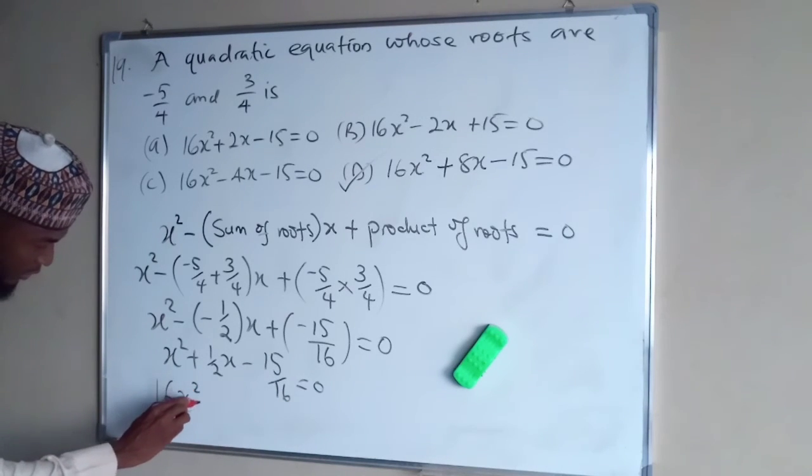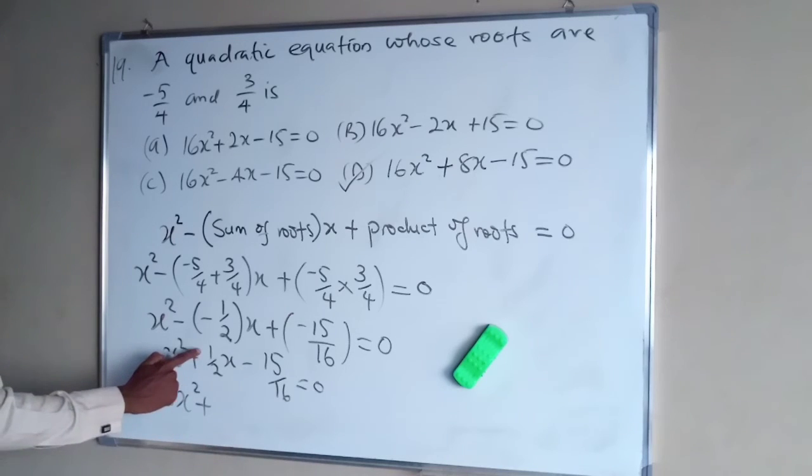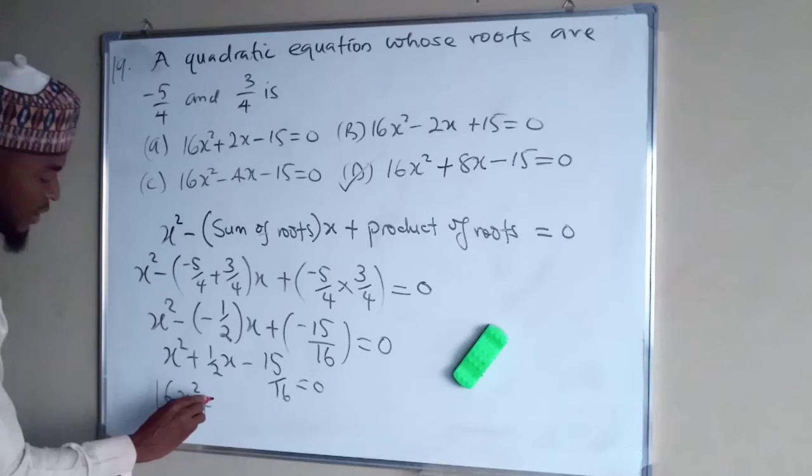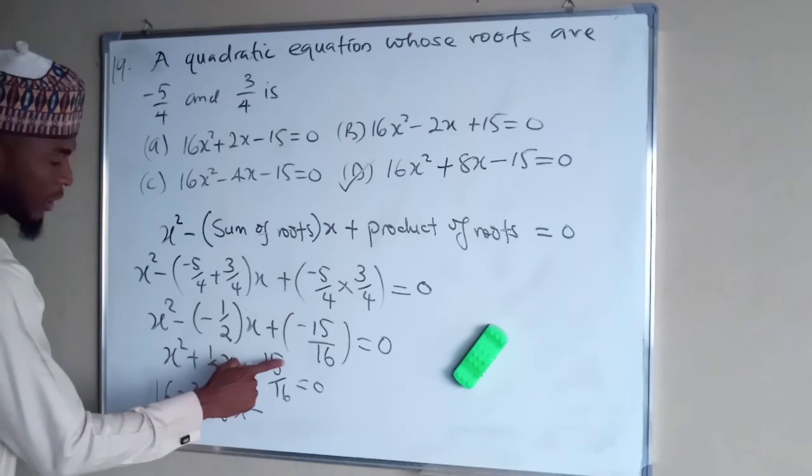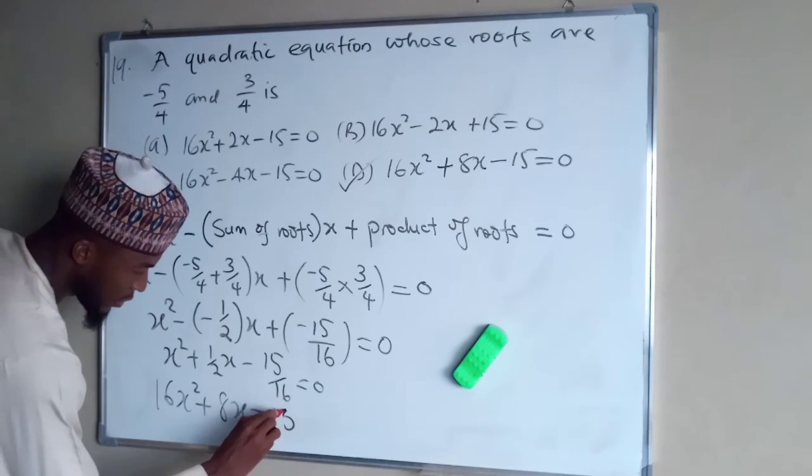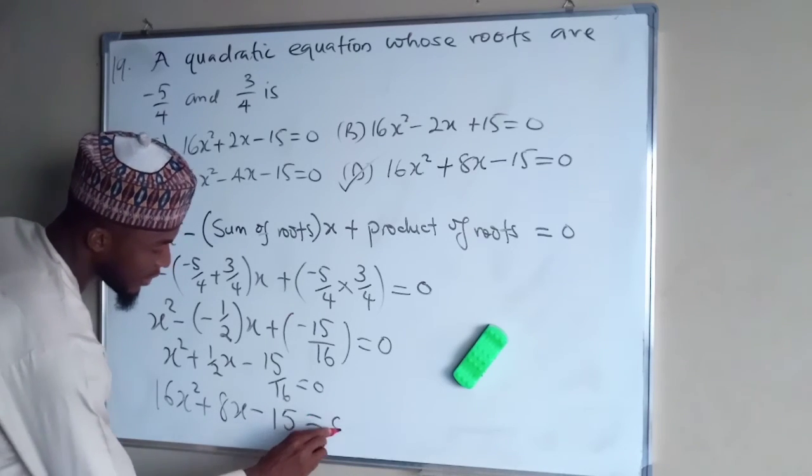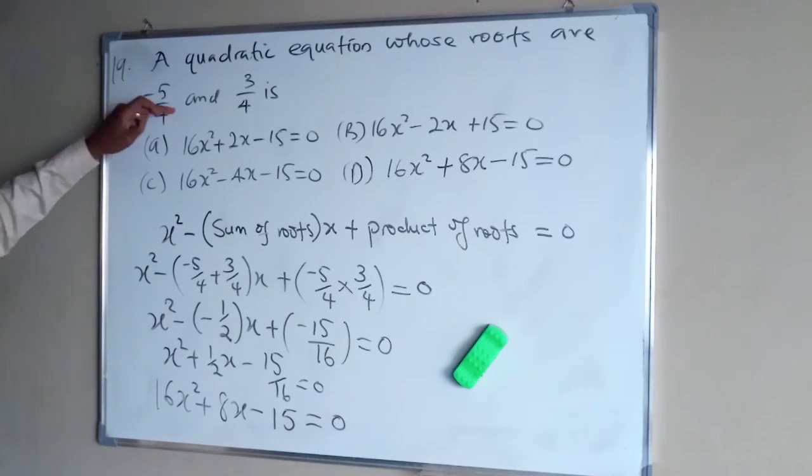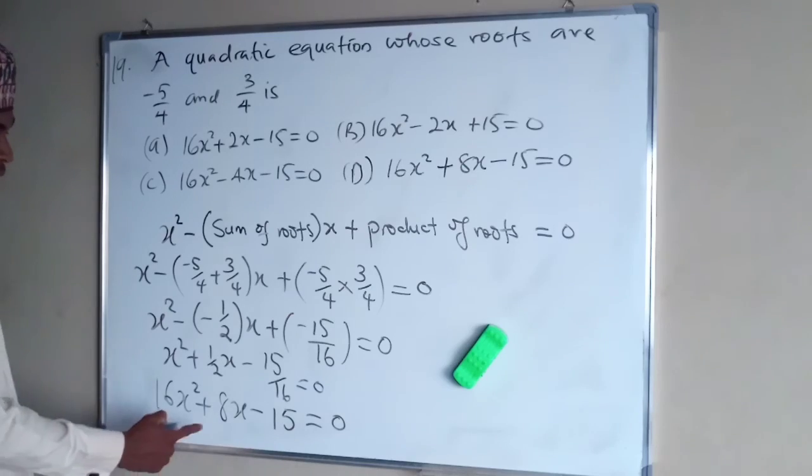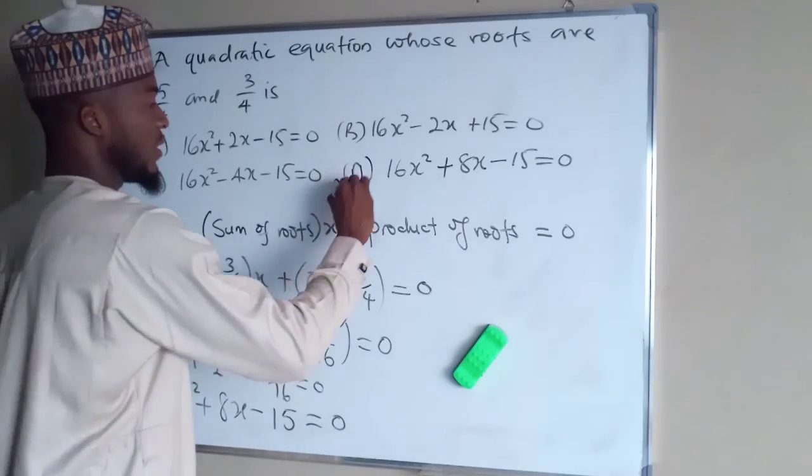So we have 16 x squared plus... we have 16 times this, which is 16 divided by 2, 8 times x is 8x, minus 16 times 15 divided by 16 is just 15. The whole of this equal to 0. This is the quadratic equation whose roots are minus 5 over 4 and 3 over 4. And the right option here is D.